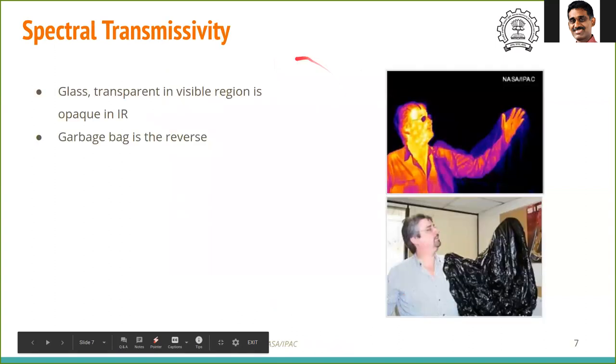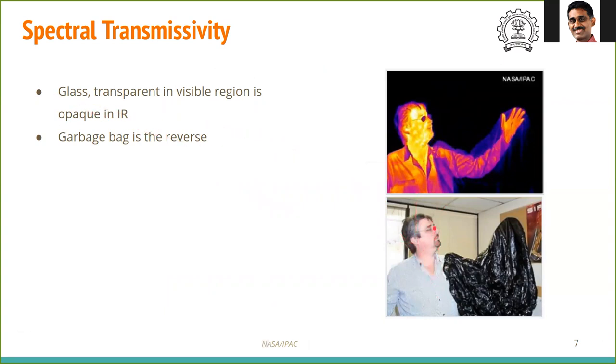A nice dramatic demonstration of this is this photograph. Notice there's a person standing here wearing specs, and on his hand there is a garbage bag. In the visible, the camera has got a sensor which senses light in the visible region. In the visible region, no light passes through—the light from behind does not pass through the garbage bag. That's why it appears black. Whereas glass is transparent. Because it's transparent, it is clear here.